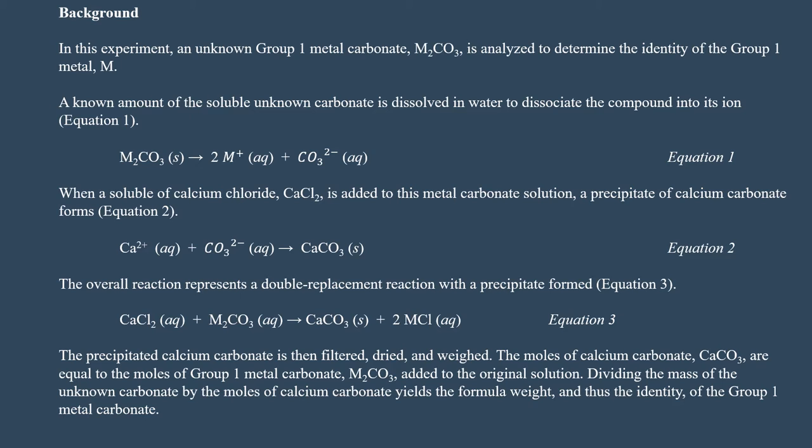A known amount of the soluble unknown carbonate is dissolved in water to dissociate the compound into its ions. M₂CO₃ as a solid will break down into 2M⁺ plus CO₃²⁻ for its dissociation equation. When a soluble amount of calcium chloride, CaCl₂, is added to this metal carbonate solution, a precipitate of calcium carbonate forms.